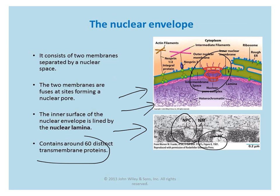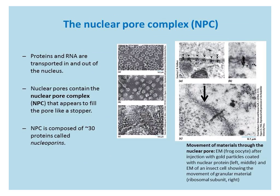The membrane itself contains 60 different types of transmembrane proteins that have many different functions for the nucleus. The nuclear pore complex, abbreviated NPCs, is comprised of 30 proteins called nucleoporins, and transport or movement occurs through these complexes. Most proteins and RNA are actually transported in and out through these pores.